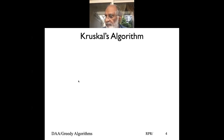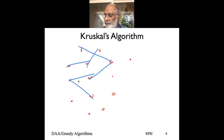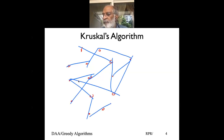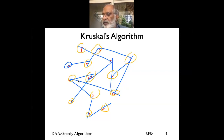So we pick one edge at a time. To start with, we don't look at any edge — we just look at only the nodes. All these nodes basically make a forest; each of these nodes makes a forest by itself. Then we look at all the edges and pick up one edge at a time, picking up the lowest cost edge.